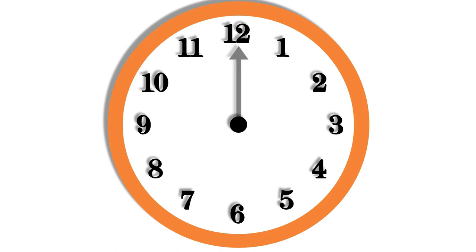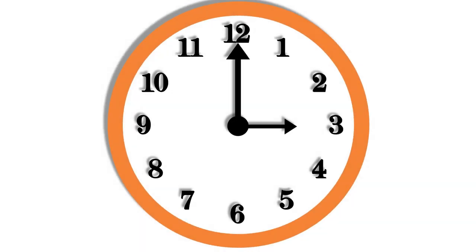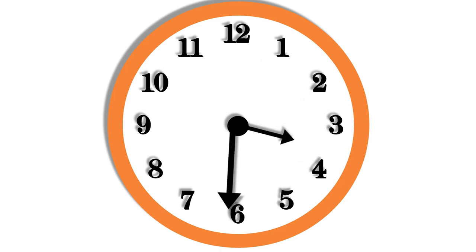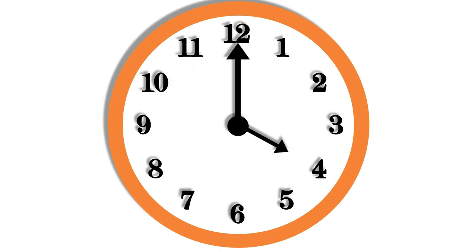A clock has two hands. The long hand is called the minute hand and the short hand is called the hour hand. There are 24 hours in a day. An hour is the time taken by the minute hand to go around the clock once, whereas the hour hand takes a single move. This makes one hour.